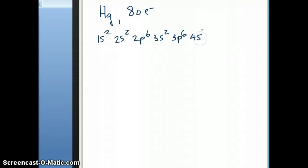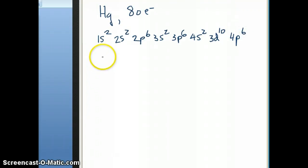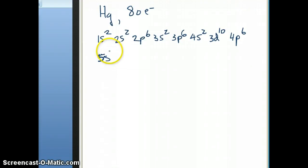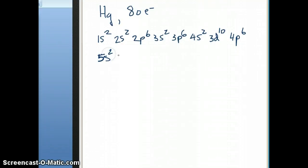From there we go to 4s first, so 4s2, and then 3d10, and then afterwards we go to 4p6. Then continuing, instead of going to 4d we go to 5s2 — this is something you can figure out using the Aufbau building principle mnemonic diagram with the arrows. So after 4p6 comes 5s2, and then we go to 4d10.